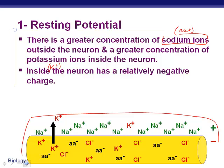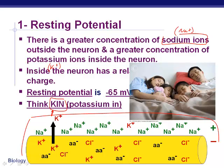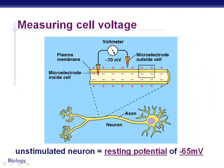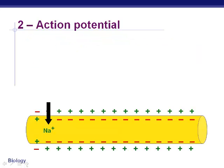A good way to remember this is 'KIN' — potassium in — potassium is inside during the resting potential. The voltage of the neuron at rest before it's engaged is minus 65 millivolts. Remember: the resting potential of an unstimulated neuron is negative 65 millivolts. This resting potential is maintained by the sodium-potassium pumps, which use active transport, meaning they require energy.